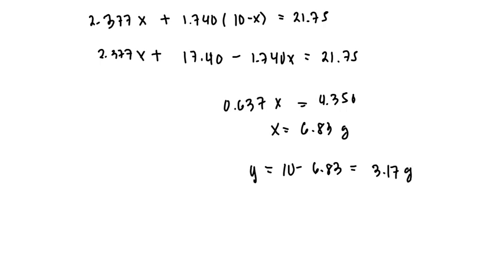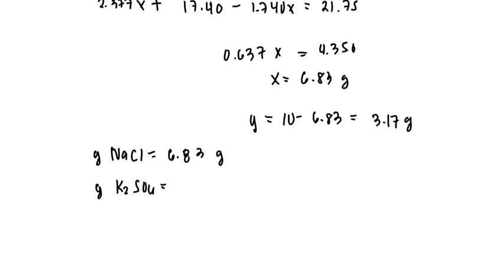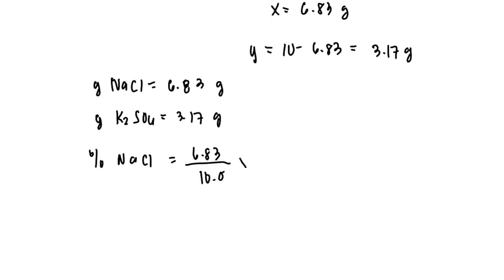This means that the mass of NaCl is 6.83 grams and the mass of K2SO4 is equal to 3.17 grams. Since we're looking for the mass percent of NaCl, we have 6.83, the mass of NaCl, divided by the mass of the mixture, which is 10, and multiply by 100. We then get 68.3 percent.